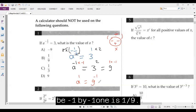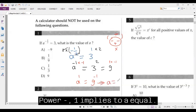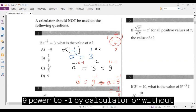Nine to the power negative one implies A equals nine to the power negative one, which by calculator is the reciprocal of nine, one-ninth. So it should be one over nine. Answer is B.